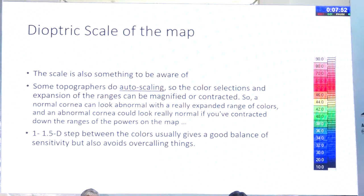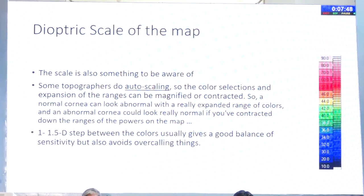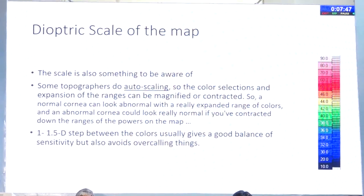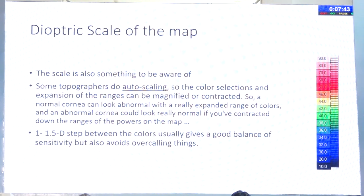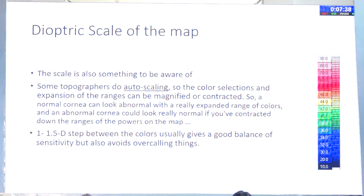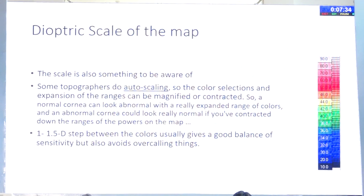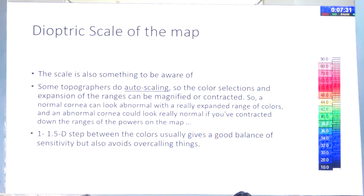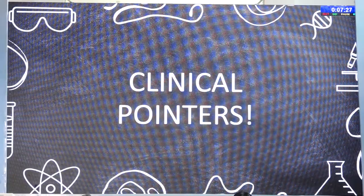The diopter scale of the map is also very important. When you have a larger diopter step you may miss softer aspects of the cornea, and if the step is very short you'll have noisy maps that are difficult to understand. Having somewhere between 1 to 1.5 diopter steps would be the right choice. Look at the tangential map and set the diopter scale right before interpreting it in the context of cataract surgery.